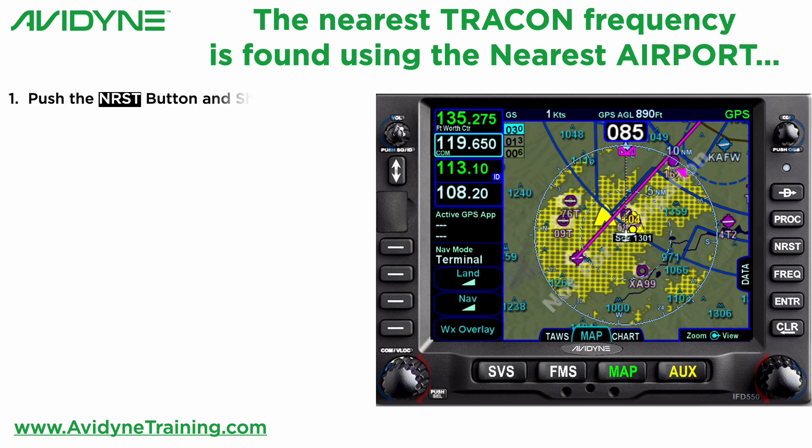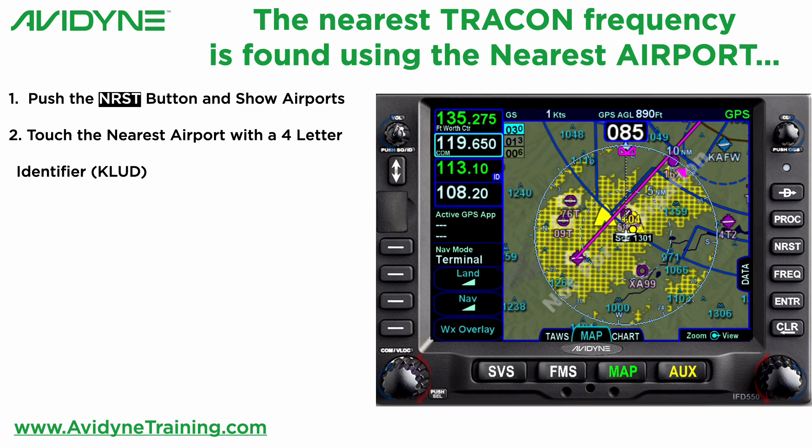I'm going to push the nearest button and make sure it's showing the nearest airports to me. Then I'm going to touch the nearest airport with a four-letter identifier. In this case it will be Decatur, K-L-U-D. The reason I want you to show the nearest four-letter identifier airport is many of the small private airports that only have three letters don't have instrument approaches. Therefore they're not going to have the nearest TRACON frequency attached to them, so it's quicker to just go to the nearest four-letter identifier airport rather than going back and forth a couple times.